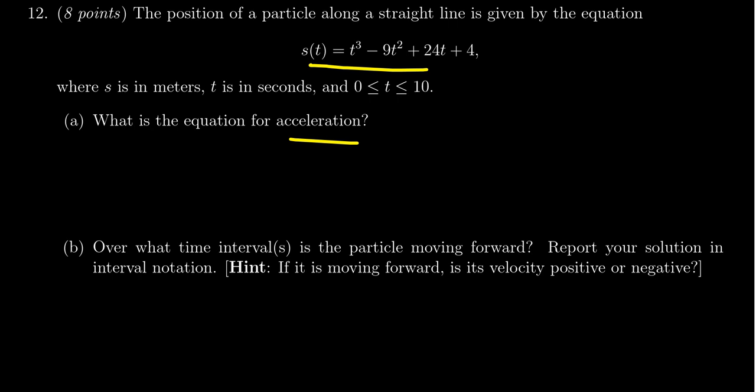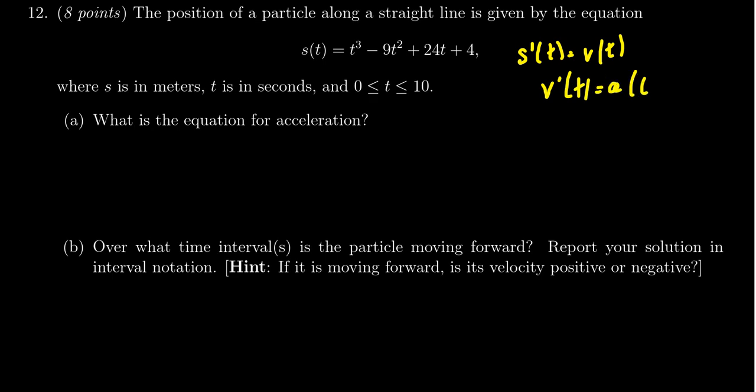The relationship between position and acceleration is it's the second derivative. Note that the derivative of position is equal to the velocity function, and the derivative of velocity is equal to acceleration. Acceleration is the change of velocity, which as velocity is the change of position, this gives us the second derivative.